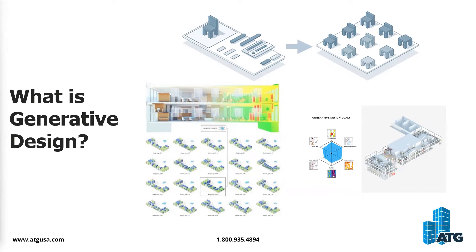For example, it may take several hours for a designer or design team to produce maybe three or four different furniture layout options for a particular space. With Generative Design, the software can compute dozens to hundreds of different layouts based on the criteria, constraints, and inputs produced by the design team. And instead of taking several hours to develop these options, Generative Design does it within a matter of minutes.